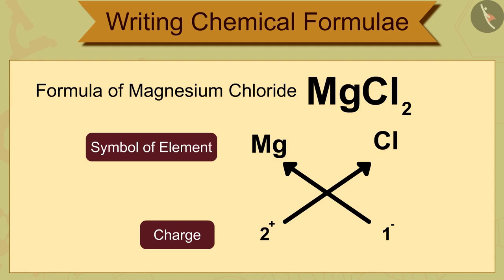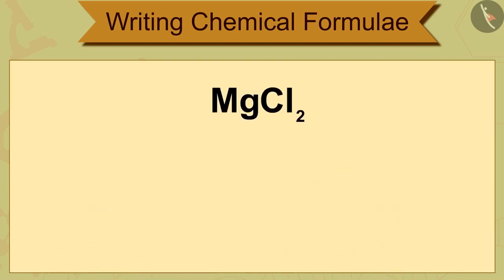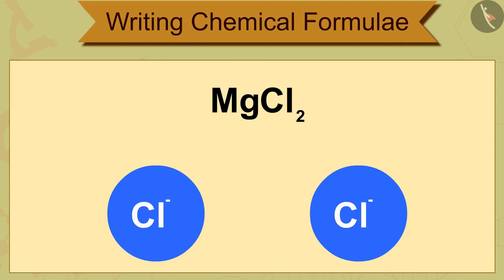Thus, we see that in the molecule of MgCl2, i.e., magnesium chloride, has two chloride ions, Cl minus, for each magnesium ion,